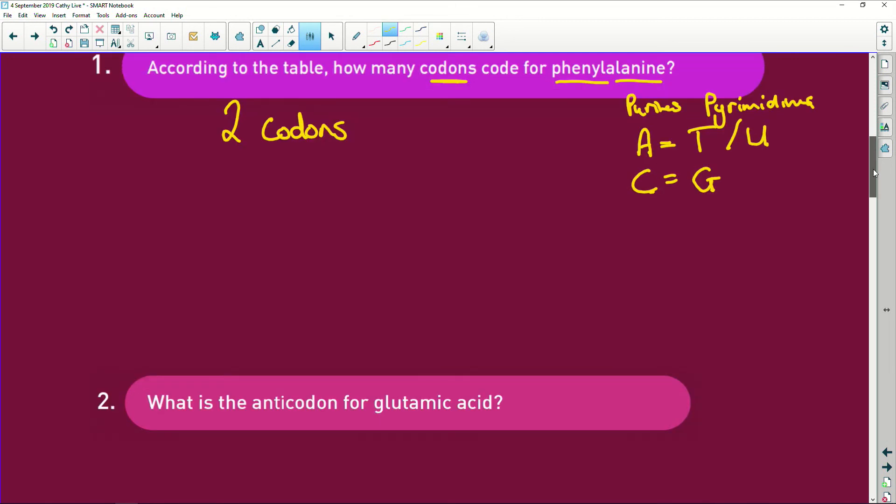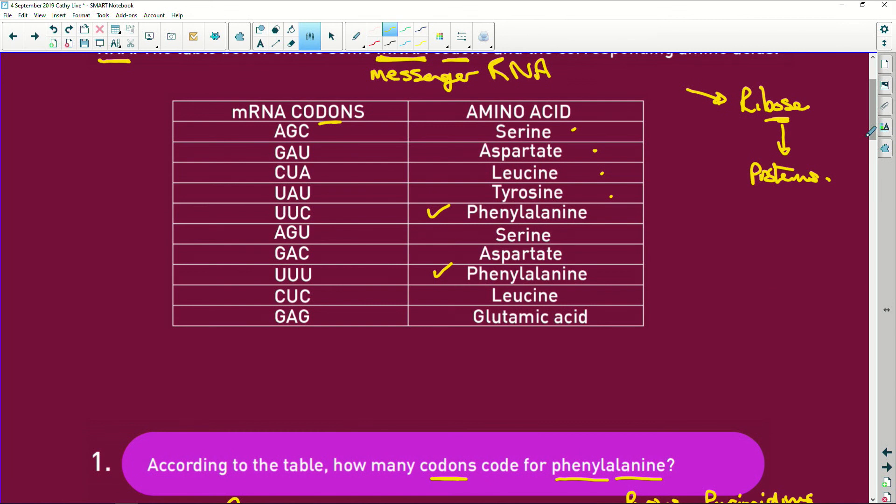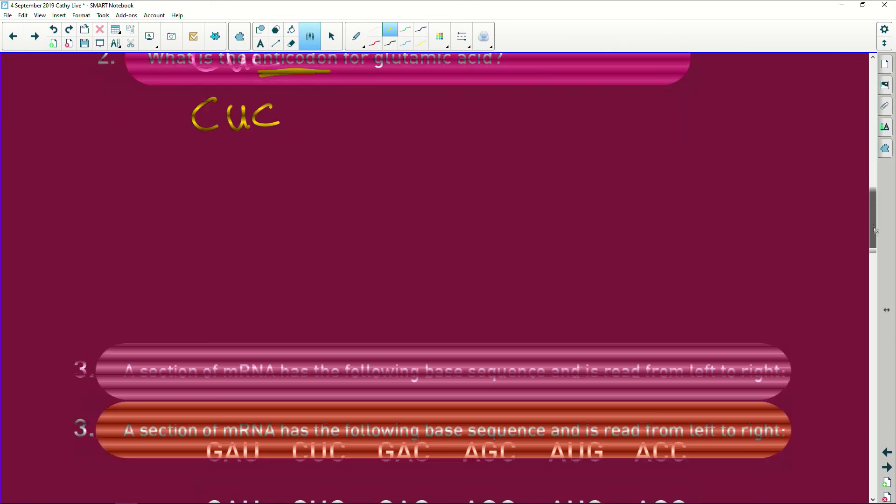What is the anticodon of glutamic acid? If we look here, the anticodon for glutamic acid, if it is GAG, that's your messenger RNA, your DNA is going to be CTC and your anticodon is going to be CUC. So for question two, the answer is going to be CUC.